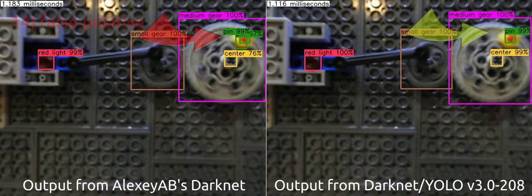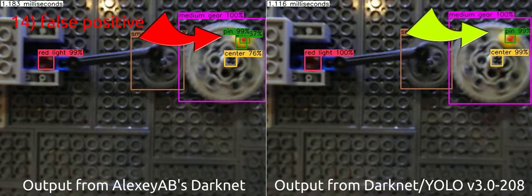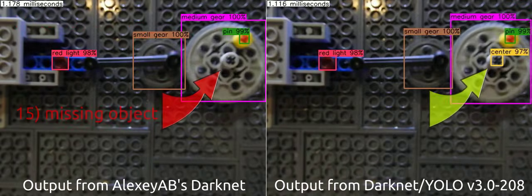On the right is the Hank AI version of Darknet YOLO. It is running version 30208.